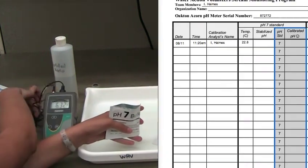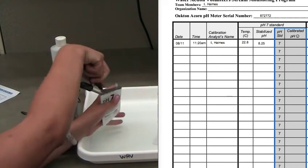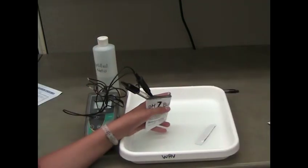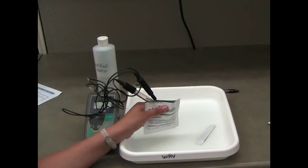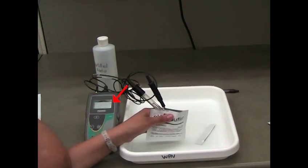Wait for the reading to stabilize and record the stabilized pH value. The pH symbol on the screen will stop flashing when the meter has stabilized. Note that this reading is not used in the comparison that you will do later on.